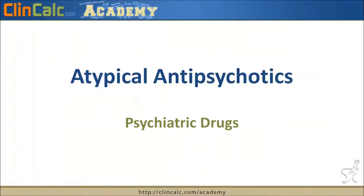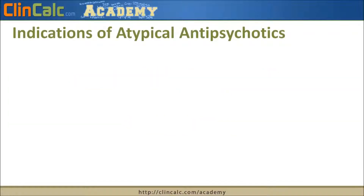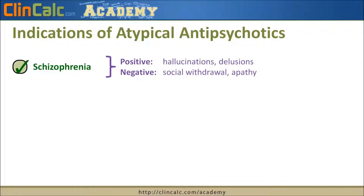In this video we'll be discussing atypical antipsychotics. They are primarily used for two specific indications. The first is schizophrenia, which is primarily characterized by positive and negative symptoms. The positive symptoms are hallucinations and delusions, while the negative symptoms are more social withdrawal and apathy.